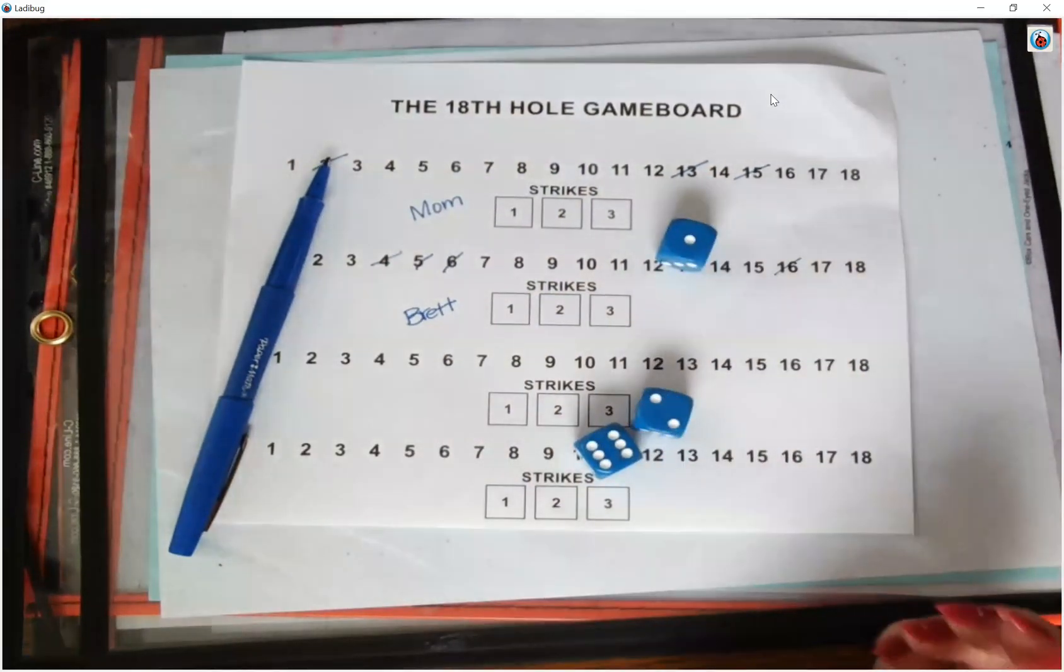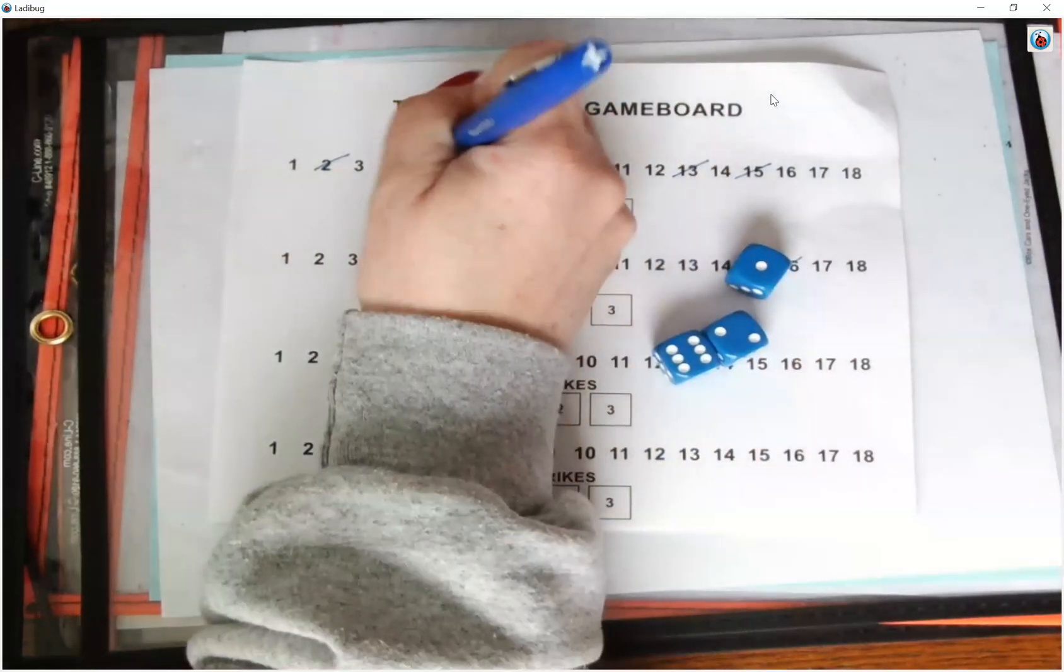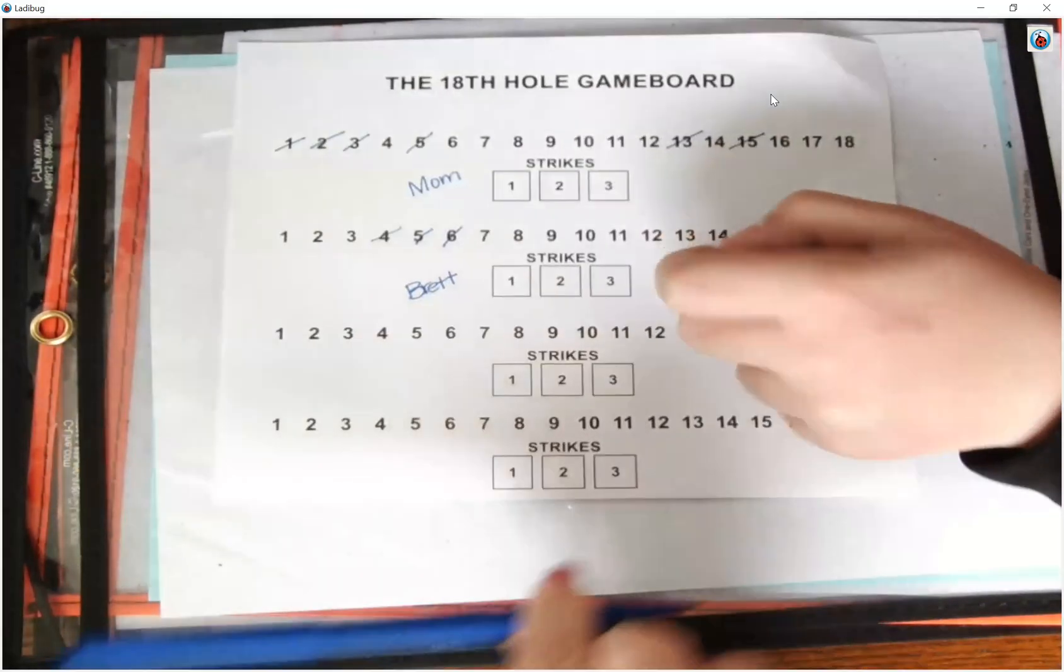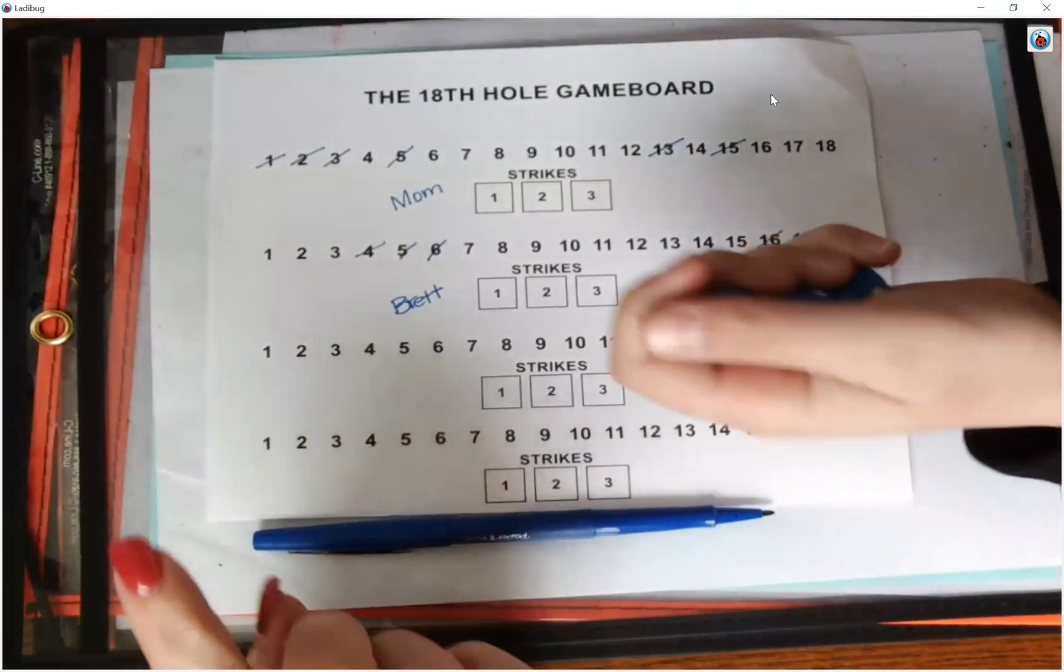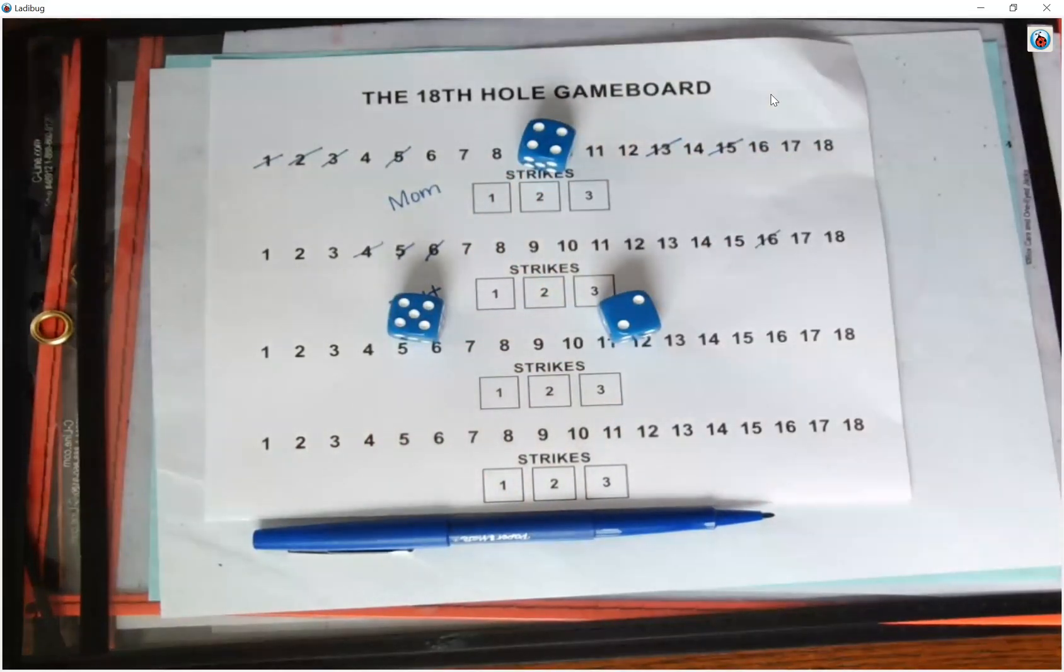All right on my turn my target number is 9. I'm going to cross off 5 plus 3 plus 1 equals 9. So again you can cross off anywhere from 1 to 4 numbers in your equation to make your target number. Now Brett and I so far have only been doing it with addition subtraction but you can use addition subtraction multiplication division. You can use whatever operations you wish.